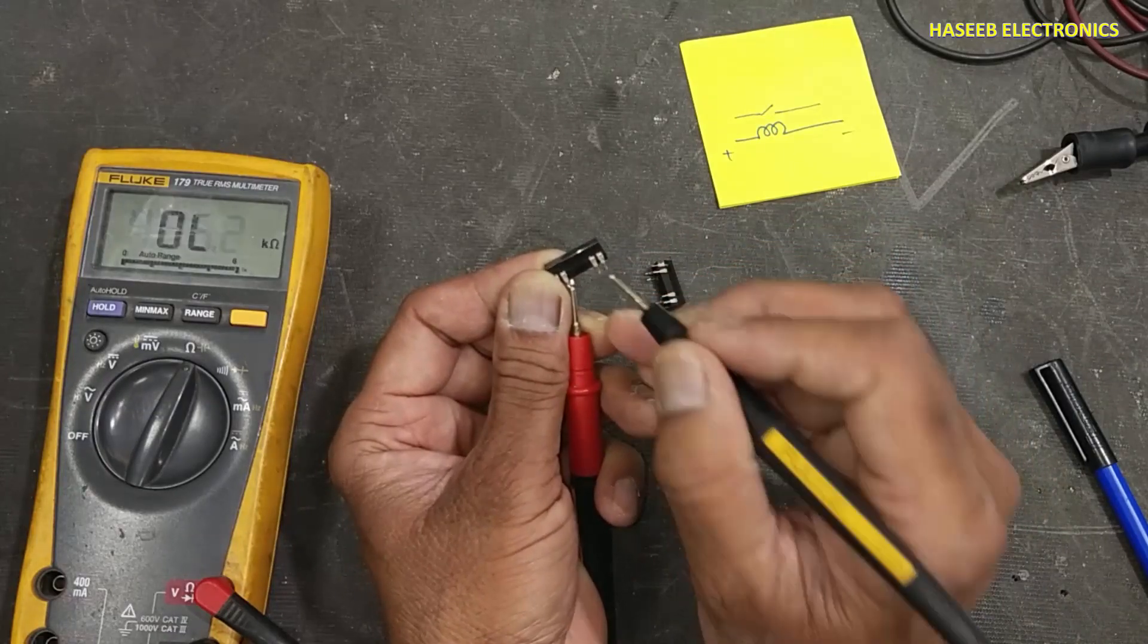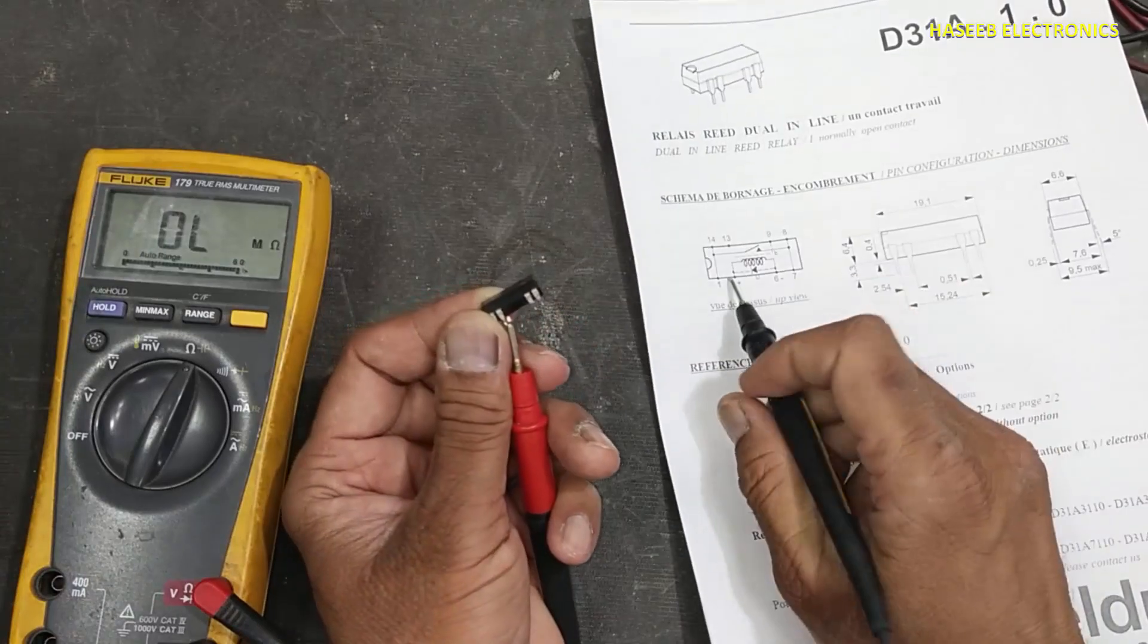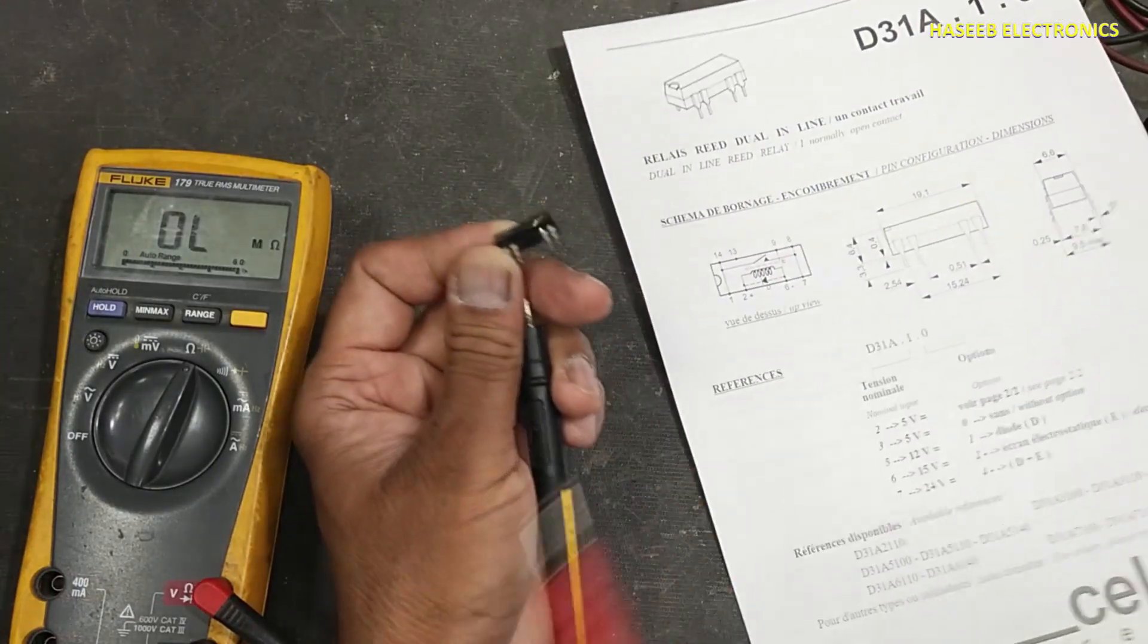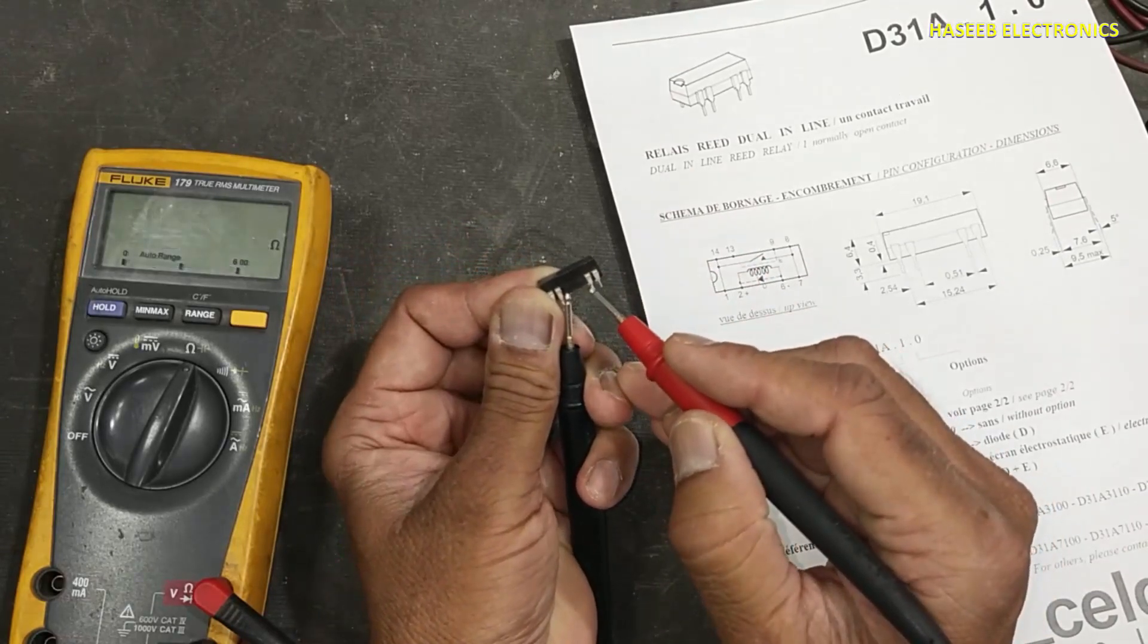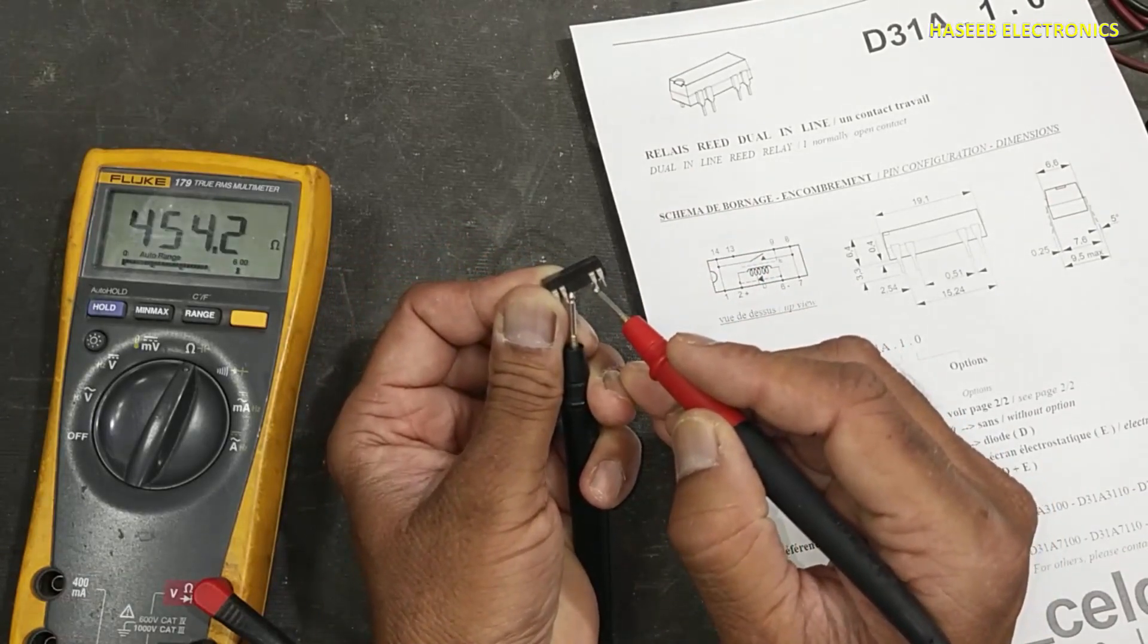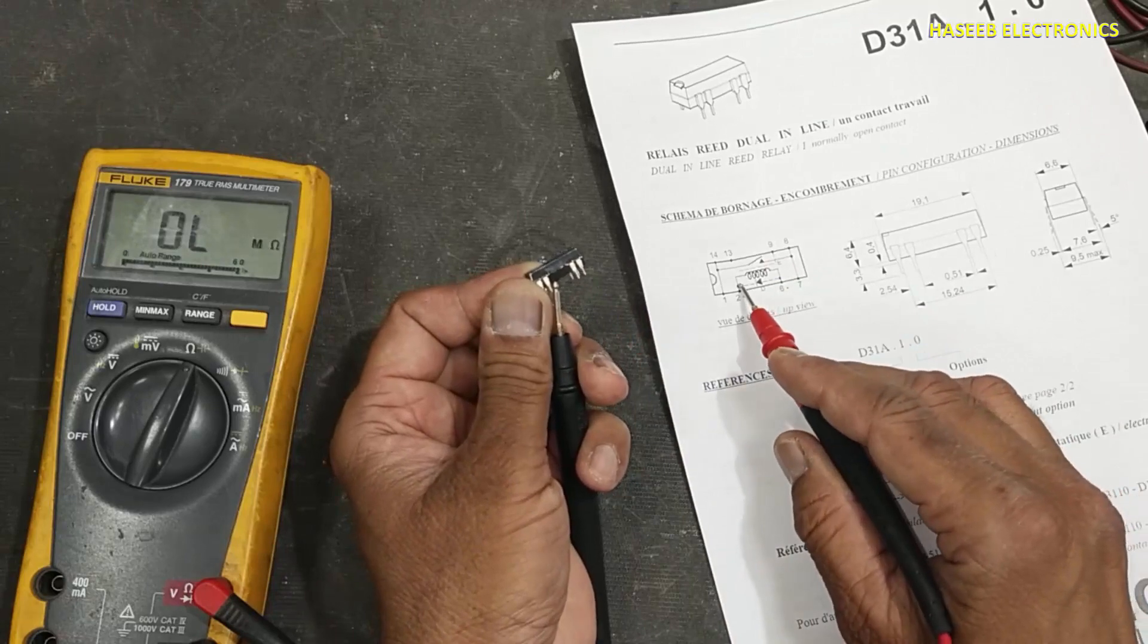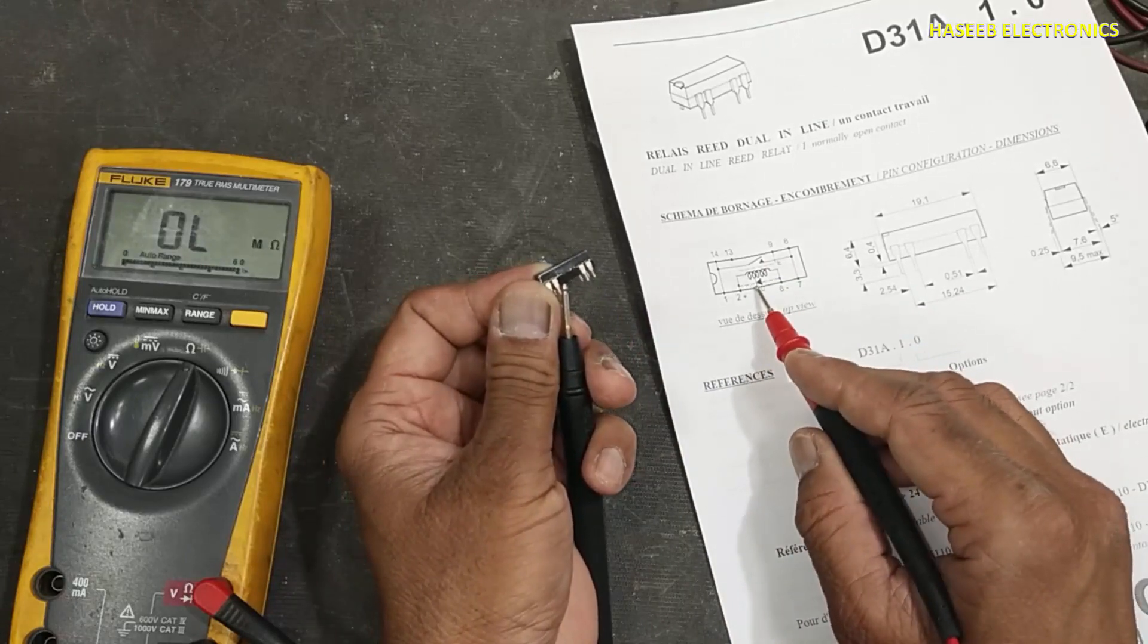485 ohms. On one side it will give coil resistance. If you reverse the leads at the same two points, it's giving 454. Why? One side will give diode drop voltage.